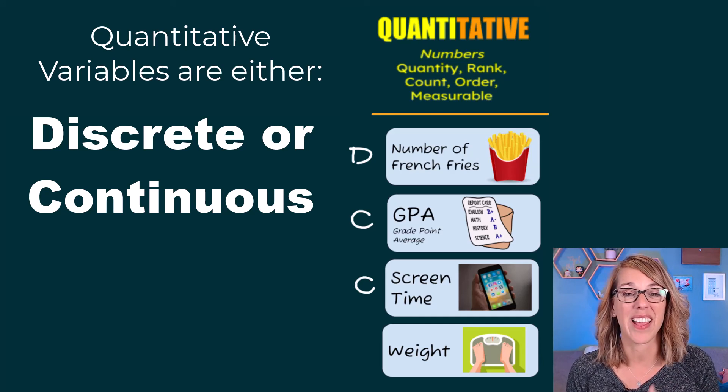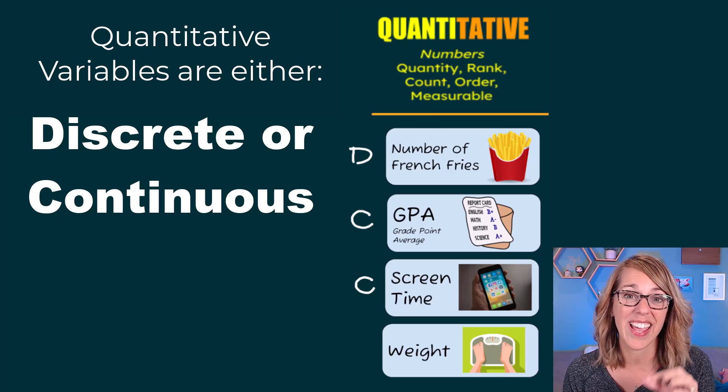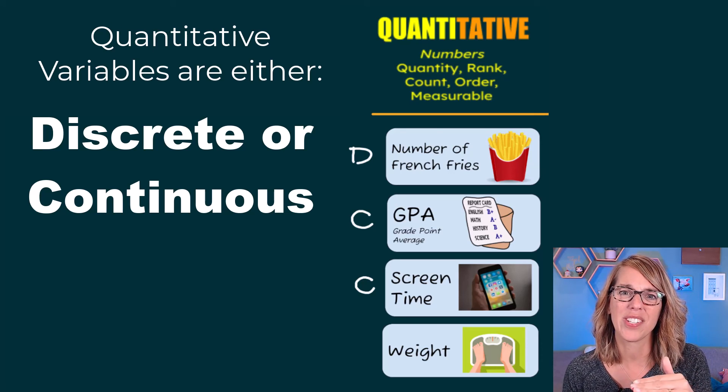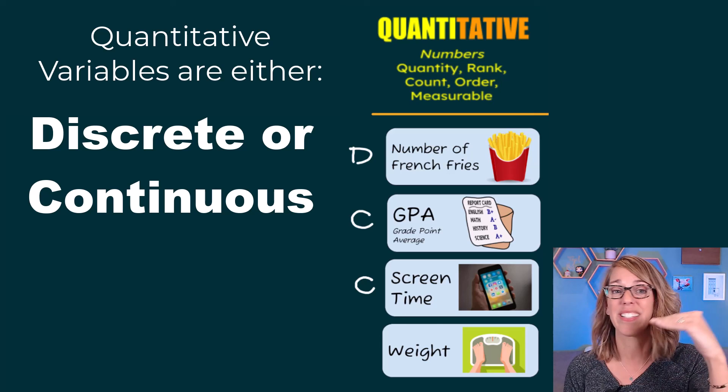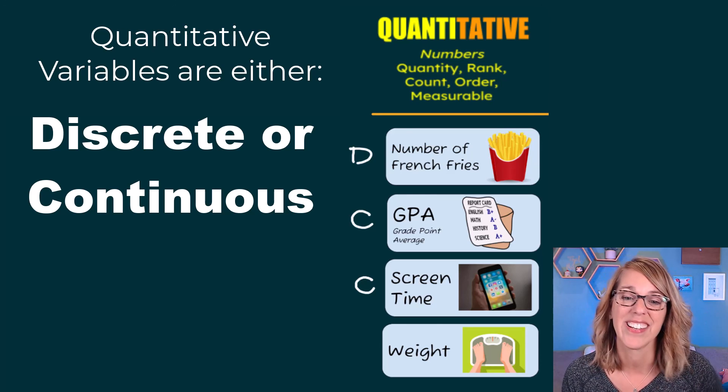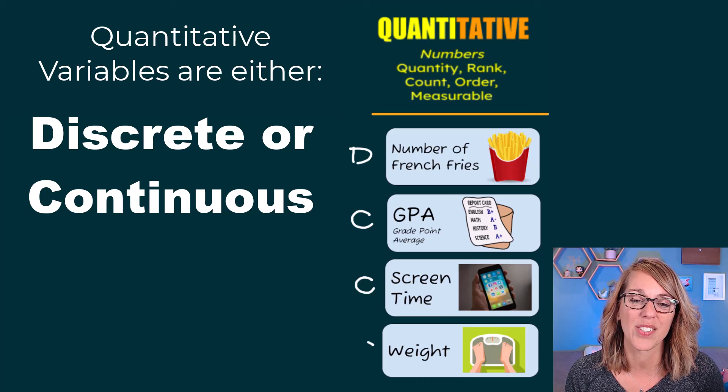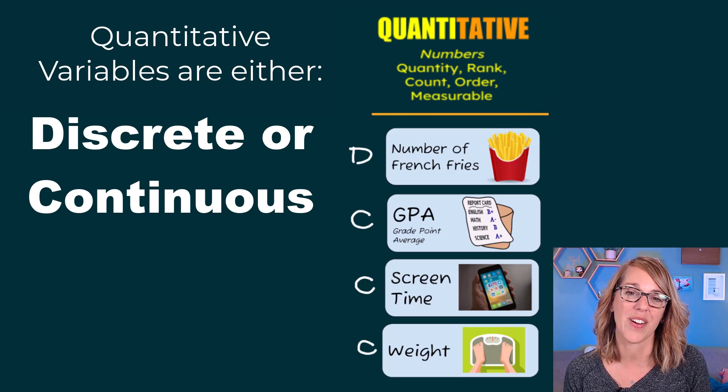Weight, same thing, right? I could eat a couple of cookies and I could gain a tiny little bit, but I don't just skip from being one weight to exactly one pound higher or exactly five pounds less. So this weight is also a continuous variable.